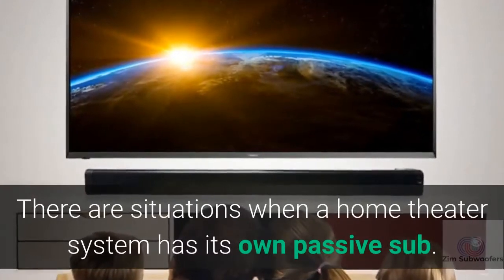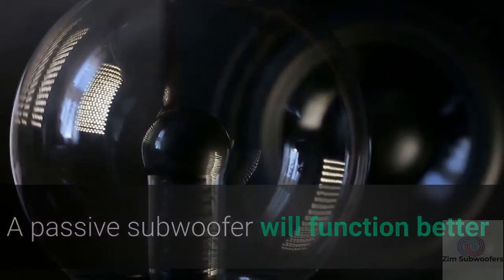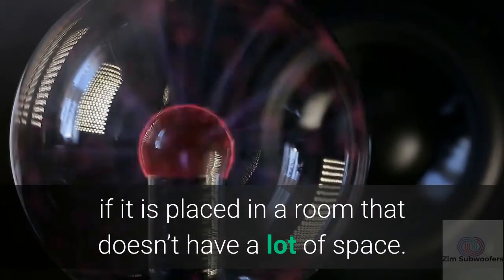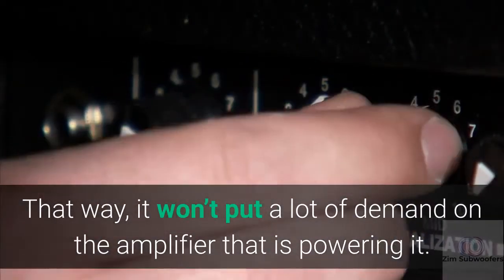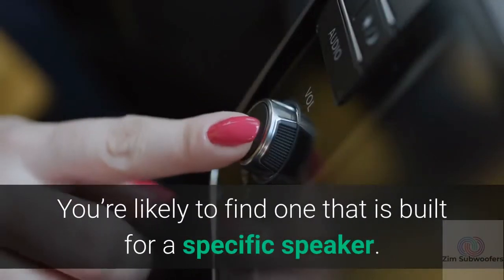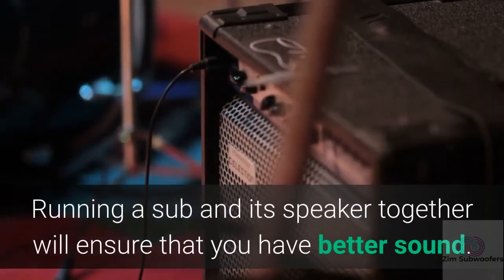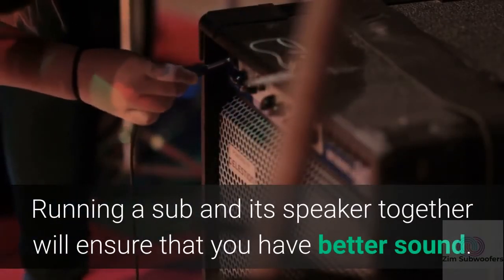There are situations when a home theater system has its own passive sub. A passive subwoofer will function better if it is placed in a room that doesn't have a lot of space. That way, it won't put a lot of demand on the amplifier that is powering it. You're likely to find one that is built for a specific speaker. Running a sub and its speaker together will ensure that you have better sound.